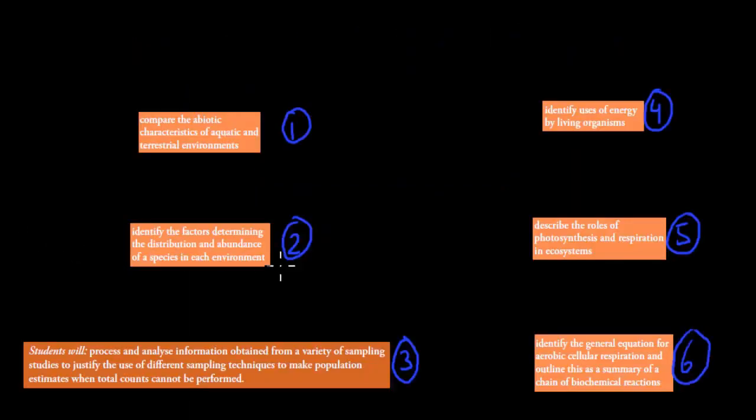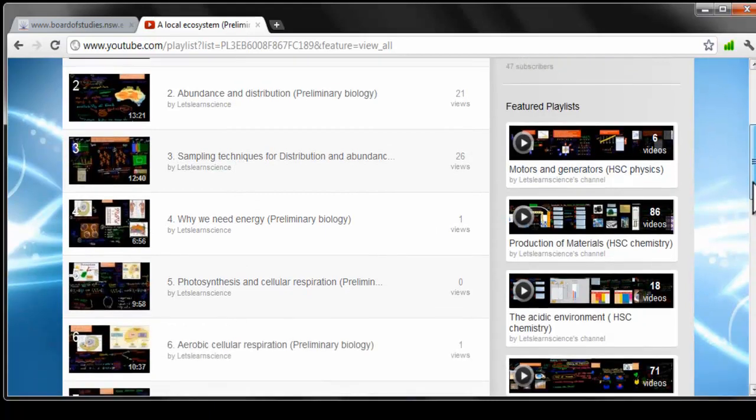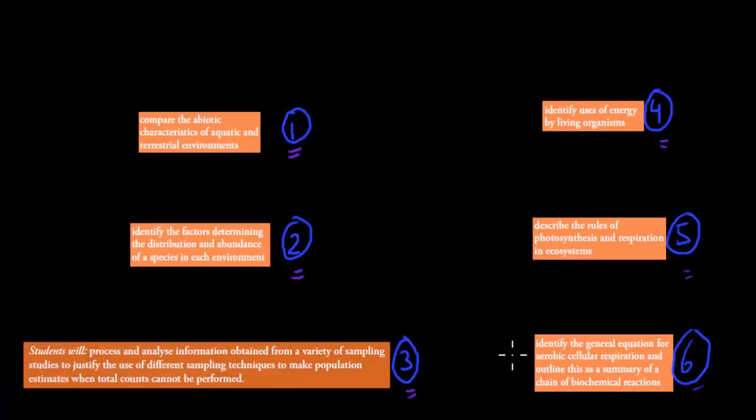And these here are our actual syllabus dot points. So we have six videos. Each video in this case has its own syllabus dot point covered in the video. So it says one, two, three, four, five, six, because that actually corresponds to videos here. So abiotic factors, abundance distribution, sampling techniques, hydrant energy, photosynthesis, and aerobic cellular respiration. These six videos are these six syllabus dot points.